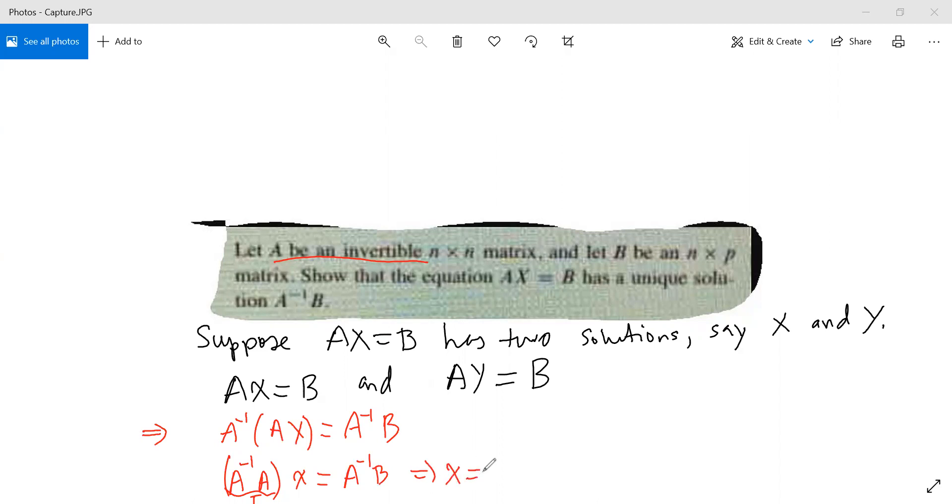For the second equation, we can do the same thing. Multiply both sides by A inverse, so we have A inverse AY equals A inverse times B. By the associative property again, this is the identity, and Y equals A inverse B.